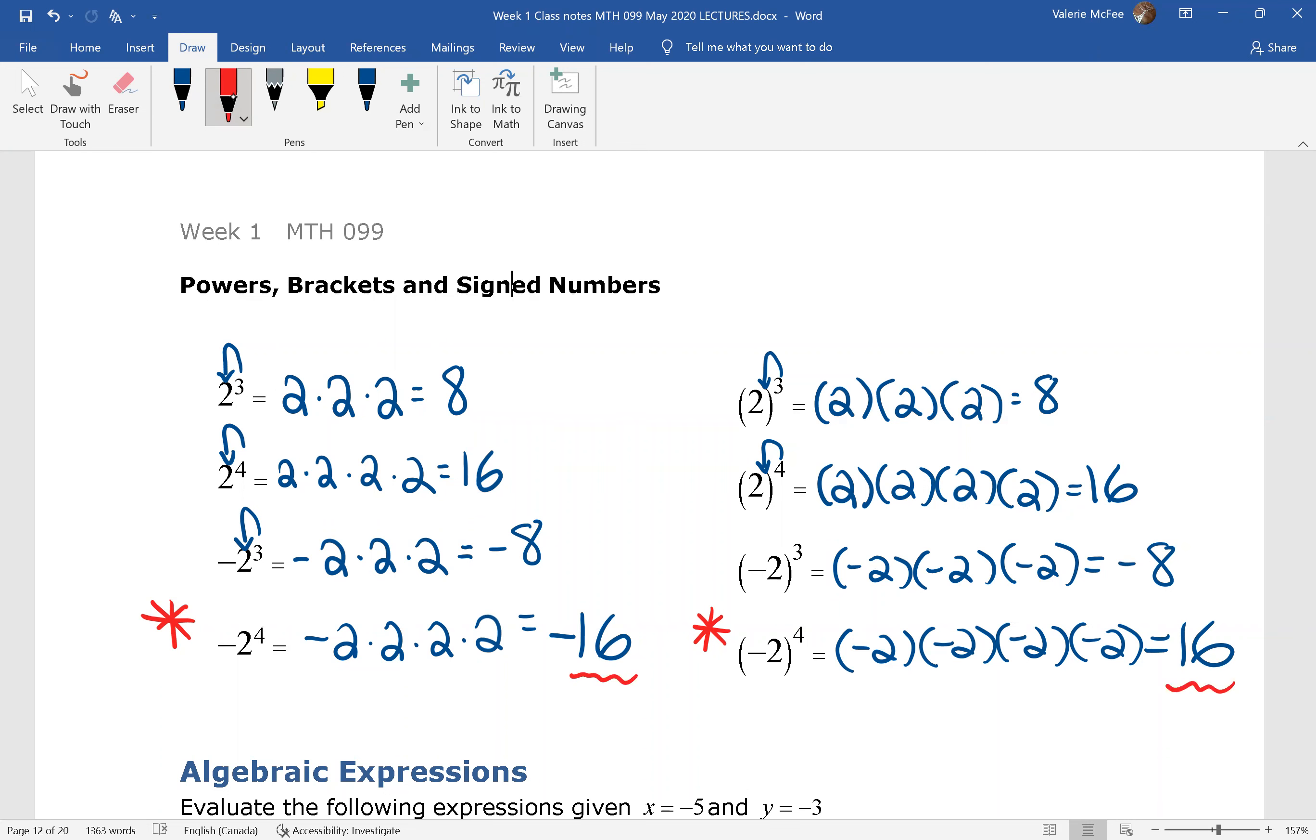When we have an odd exponent with a negative base, our answer will be negative. When we have an even exponent, and the negative base is in brackets, then we're going to have a positive product. Be careful about your brackets. Pay attention. Use them carefully.